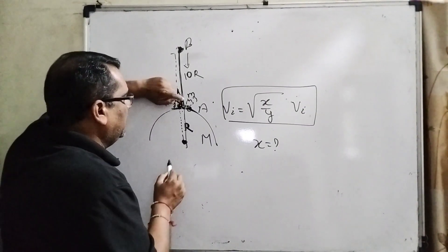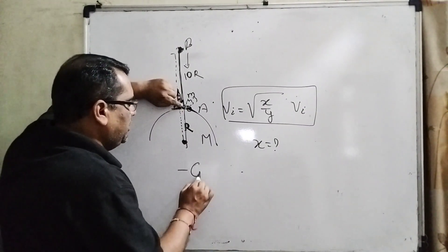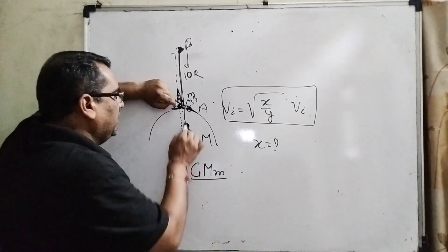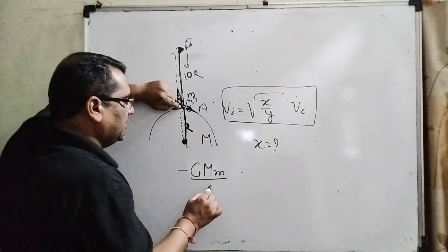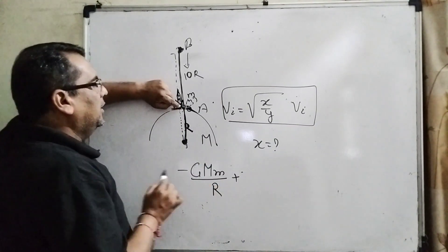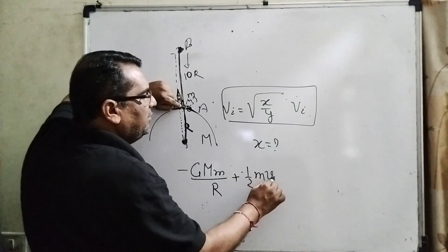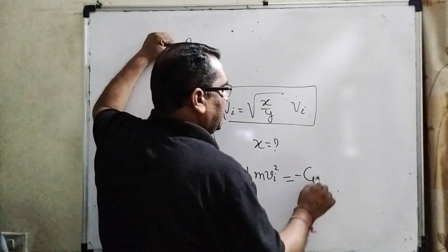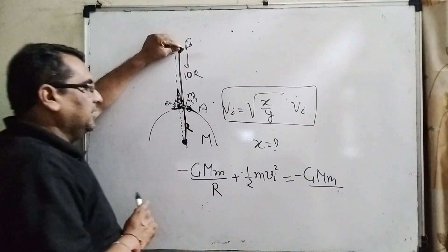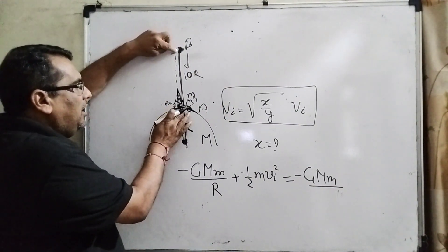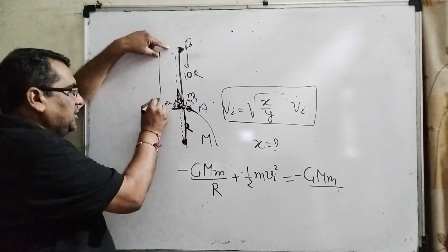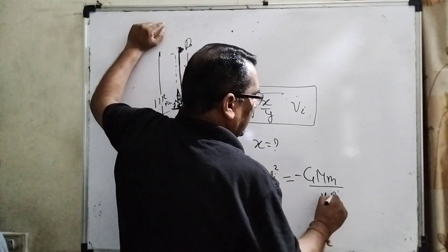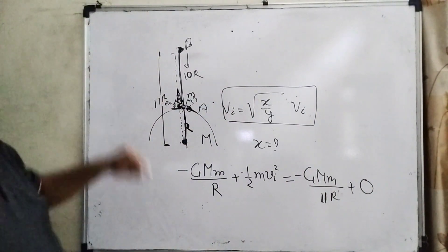Now, total energy means kinetic energy plus potential energy. The potential energy is minus GMm over R, where capital M is the mass of the earth, small m is the mass of the body or satellite, and R is the distance from the center of the earth. The initial kinetic energy is (1/2)m·Vi squared. The height given from the surface is 10R, and this is R, so the total distance from the center of the earth is 11R. We put 11R here. Kinetic energy at point B is zero.